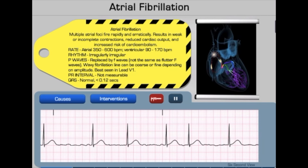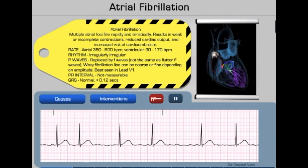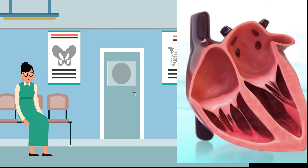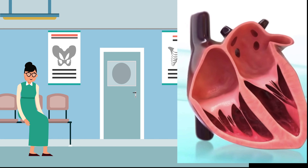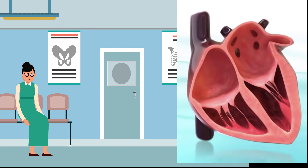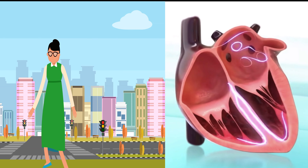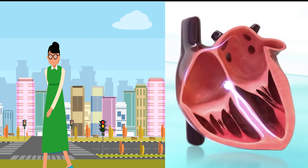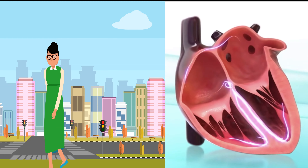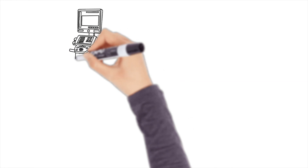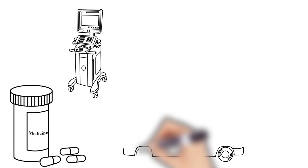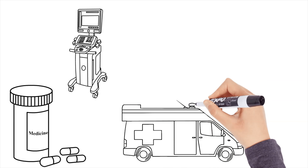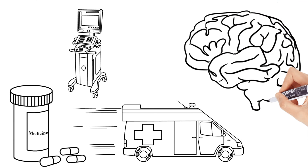A normal heart rate is about 60 to 100 beats per minute. When you are in AFib, your heartbeat will be irregular and can go up to 600 beats per minute. Episodes of atrial fibrillation may come and go, or they may be persistent. Although AFib itself usually isn't life-threatening, it is a serious medical condition that requires proper treatment to prevent stroke.